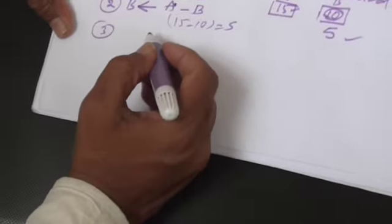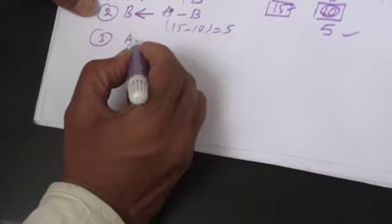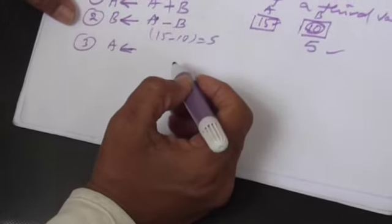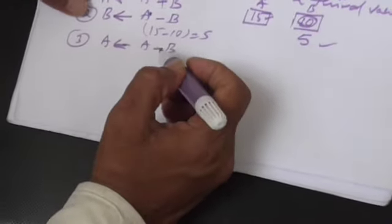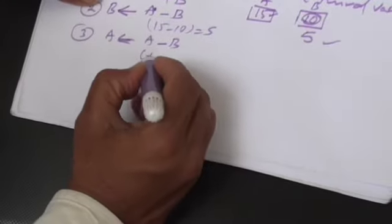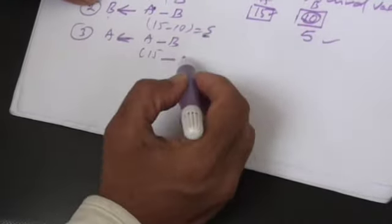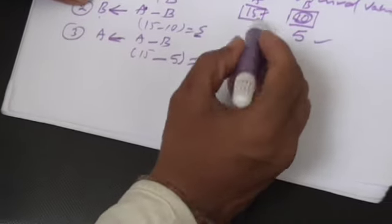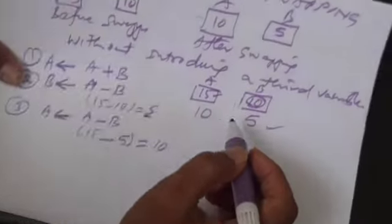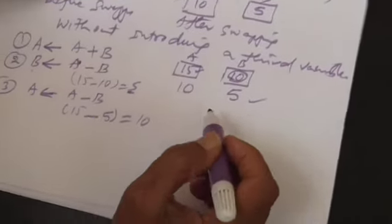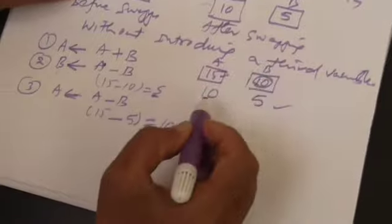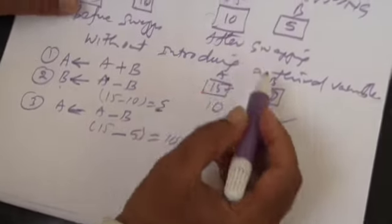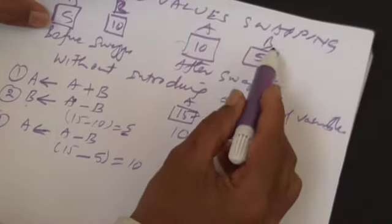As a third step, you write A is A minus B. The value present in B is now 5, so A becomes 15 minus 5, which gives 10. By performing these operations, you are able to swap the values — finally, the value present in A will be 10 and the value present in B will be 5.